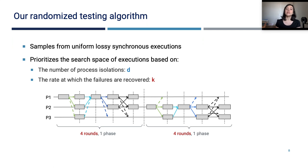So our randomized testing algorithm samples from this uniform lossy synchronous executions, which is a subset of asynchronous executions. So this already gives us a good reduction. But we further prioritize the search space of executions based on the number of process isolations D, and the rate at which the failures are recovered K. So we actually sample from D-bounded, K-periodic, uniform lossy synchronous executions.